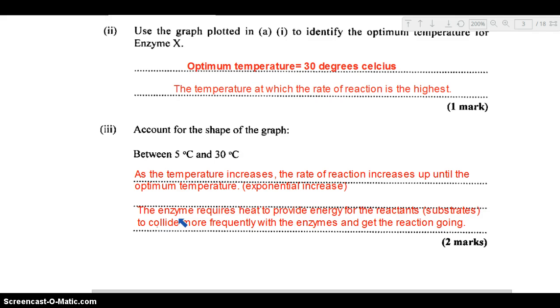The enzyme requires heat to provide the energy for the reactants. These are the substrates that the enzyme is going to be reacting with. They need to be energized and they collide more frequently with each other and also the enzyme so that the reaction can get going. We need some level of energy so that as the temperature is increasing, you have that increased rate of reaction up until the optimum temperature where the rate of reaction would be the highest.